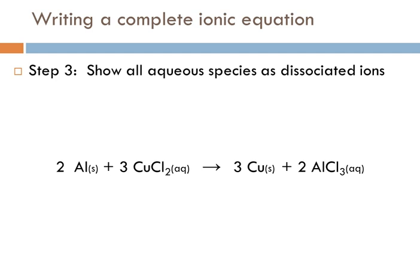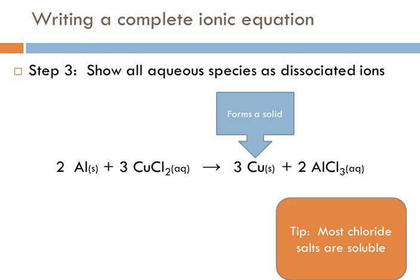So now what we need to do is write a complete ionic equation. We want to take all of our aqueous species and show them as dissociated ions, anything that's going to be soluble. The copper, of course, is a metal and it's not charged. And we need to remember that most chloride salts are soluble. If you don't know your solubility rules, this is a good one to know.